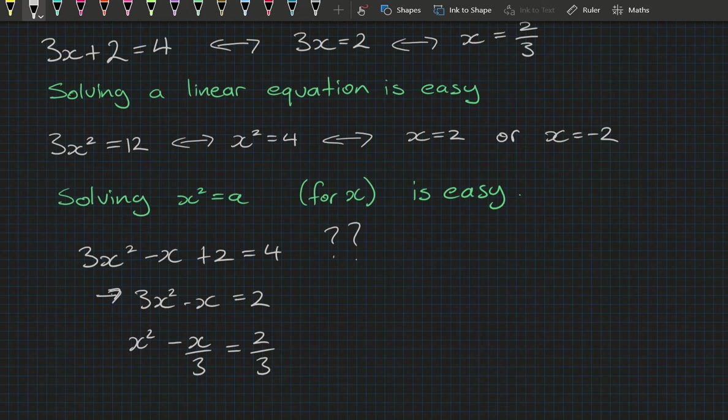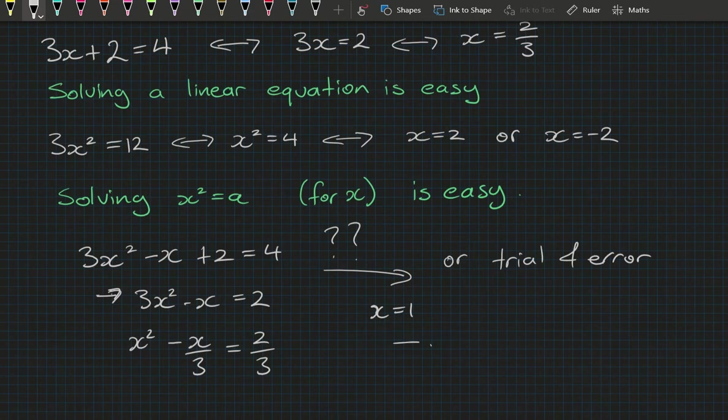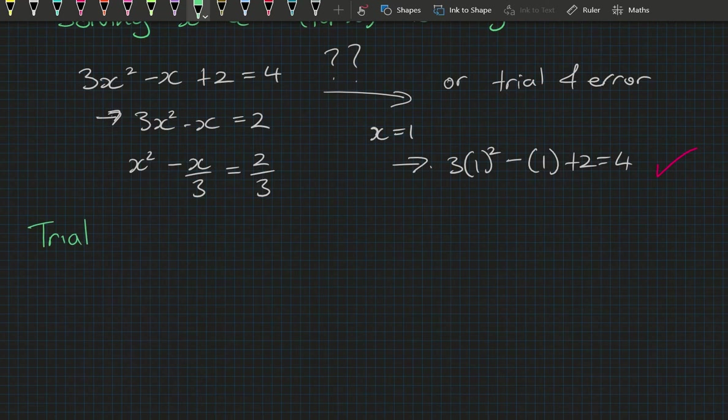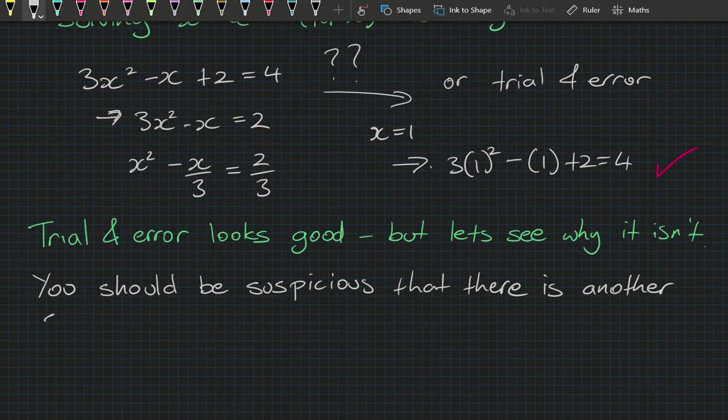So what if we just went trial and error? Trying x equals 1, subbing that in gives 3 times 1 squared minus 1 plus 2 equals 4, and that makes perfect sense. However, trial and error looks good but isn't reliable — you should be suspicious there is another solution, because x squared equals 4 has two solutions: x equals 2 and x equals minus 2.